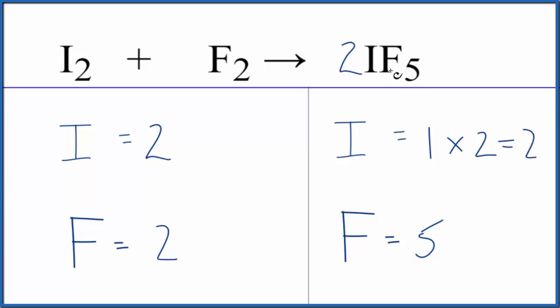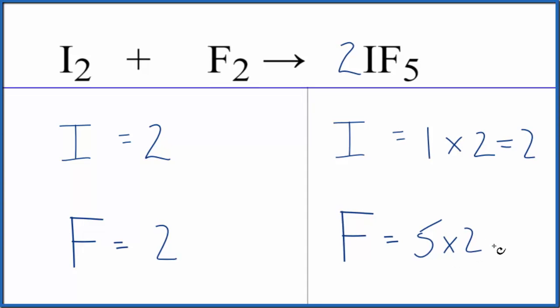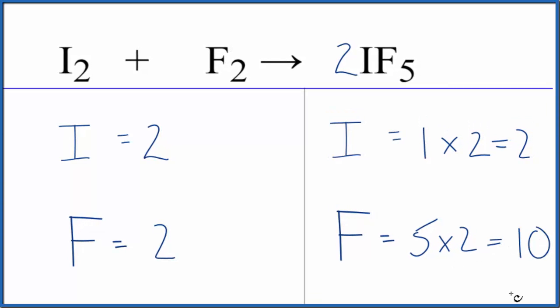Then the 5 times the 2, that gives us 10 fluorine atoms. That's okay, though, because now over here, if we just put a coefficient of 5 in front of the F2, 2 times 5, that equals 10. So this equation is balanced.